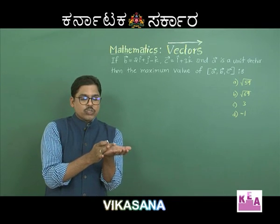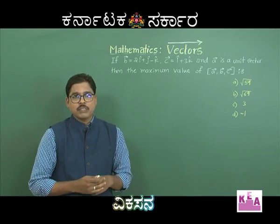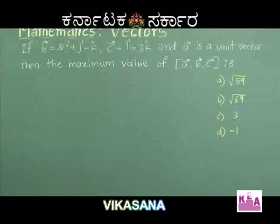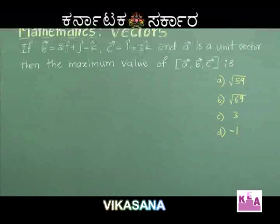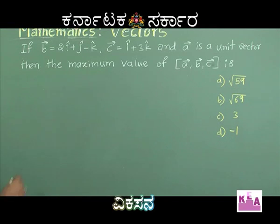Next question: if vector B is equal to 2i + j − k, vector C is equal to i + 3k, and vector A is a unit vector, then the maximum value of the scalar triple product of vector A, vector B, vector C is: option A √59, option B √69, option C 3, option D −1.